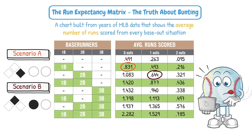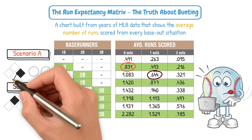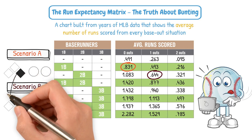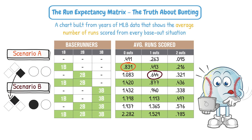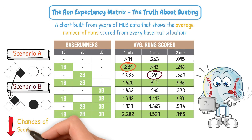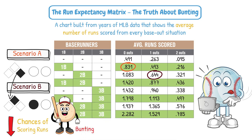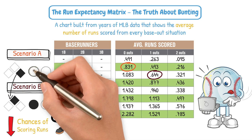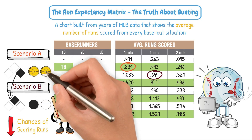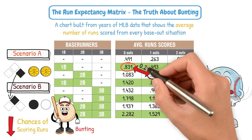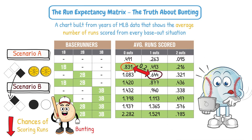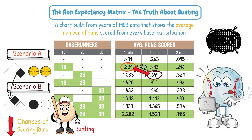After a successful bunt, moving the runner from first to second with no outs to one out, you actually decrease your chances of scoring runs. You traded an out — your most valuable asset as an offense — for a 0.2 run expectancy drop. So what looked like a smart play was statistically a mistake.